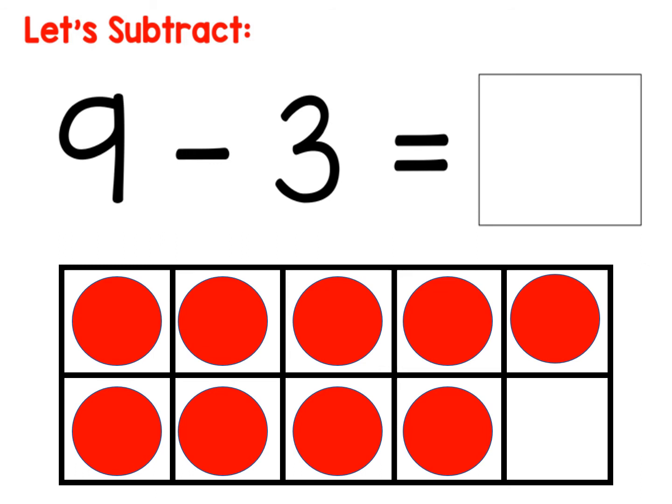Okay boys and girls, let's try this out. Nine minus three. So you would start out by putting nine counters into your ten frame. Let's count to make sure we have nine: one, two, three, four, five, six, seven, eight, nine. That's the minuend, is the nine.